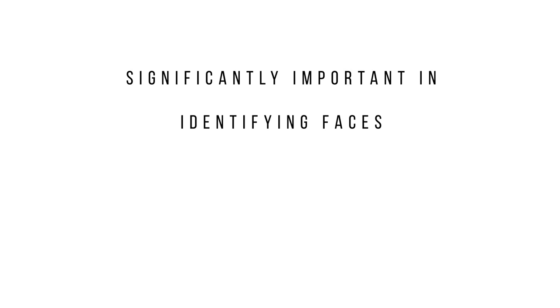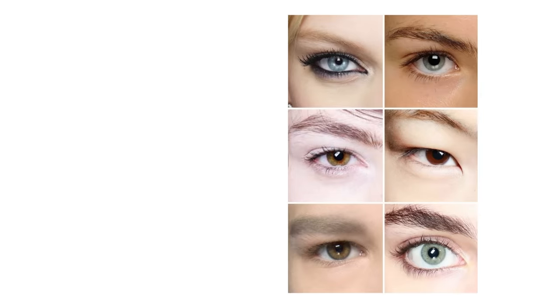Moving on, eye shape is significantly important in identifying faces — it's why we censor only the eye region to maintain privacy in photos. This region of your face contains the most detail about you, from tiny fine wrinkles like crow's feet that indicate you laugh a lot, to larger identifiers such as your eye shape. Without these cues, our brain can't subconsciously fill in the details and the subject remains anonymous.